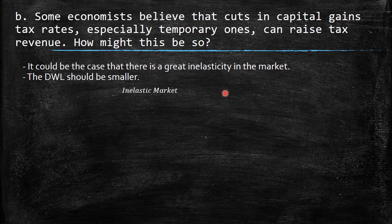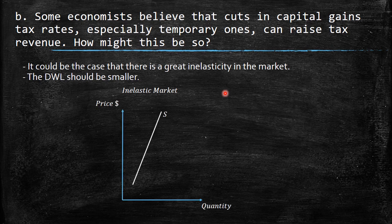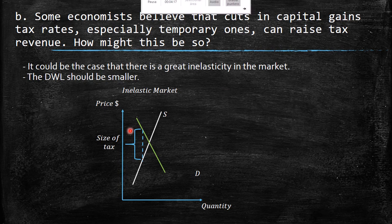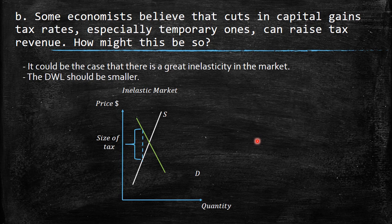Remember, in an inelastic market, the size of the tax determines the deadweight loss triangle — the efficiency that is going to be lost. Due to the quantities not varying too much, from this point to this point it's not going to be a huge change. So due to this fact, we can conclude that maybe it could be the case that cutting capital gains tax rates can raise tax revenue.